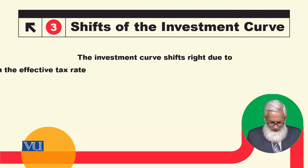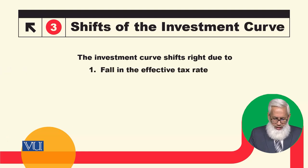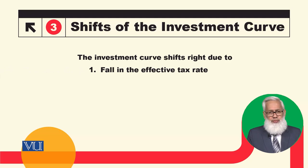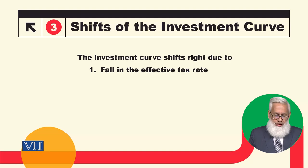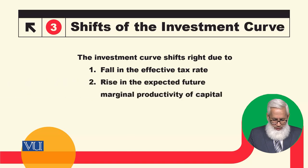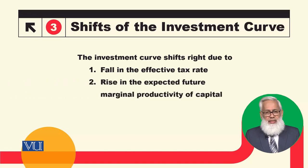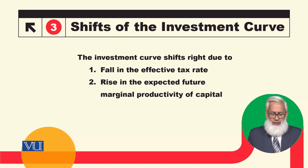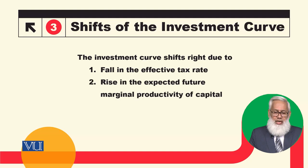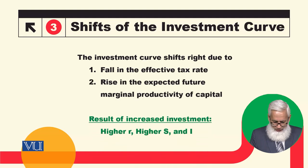Now consider how the investment curve shifts. If there is a fall in the effective tax rate, the investment curve will shift rightward — we will do more investment. Also, an increase in the expected future marginal product of capital will shift the investment curve rightward.